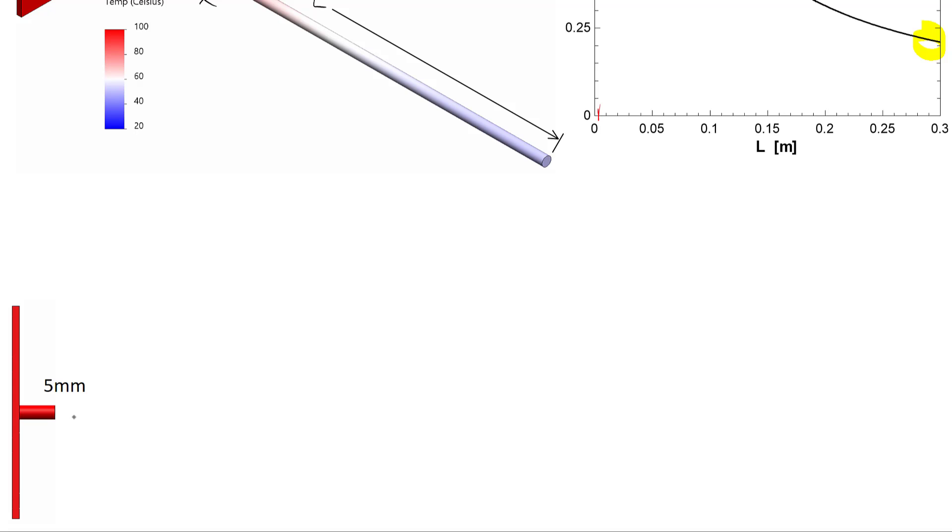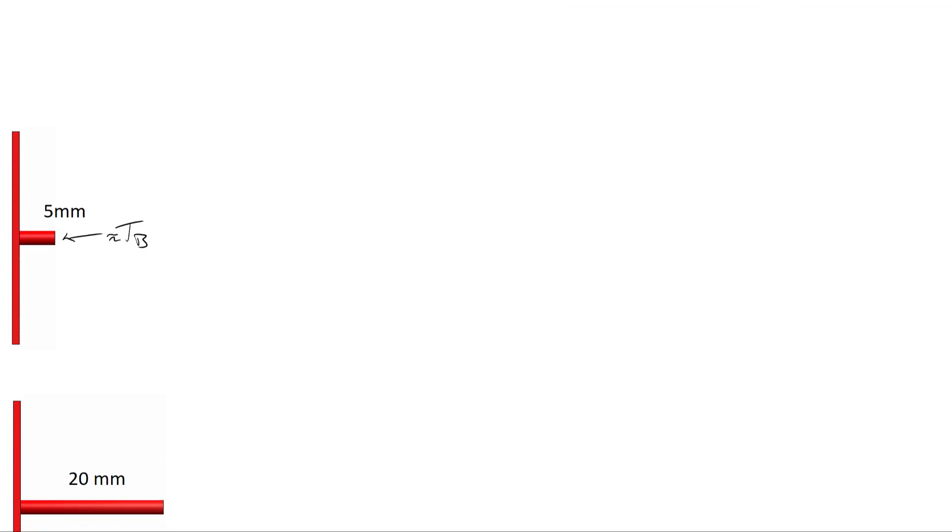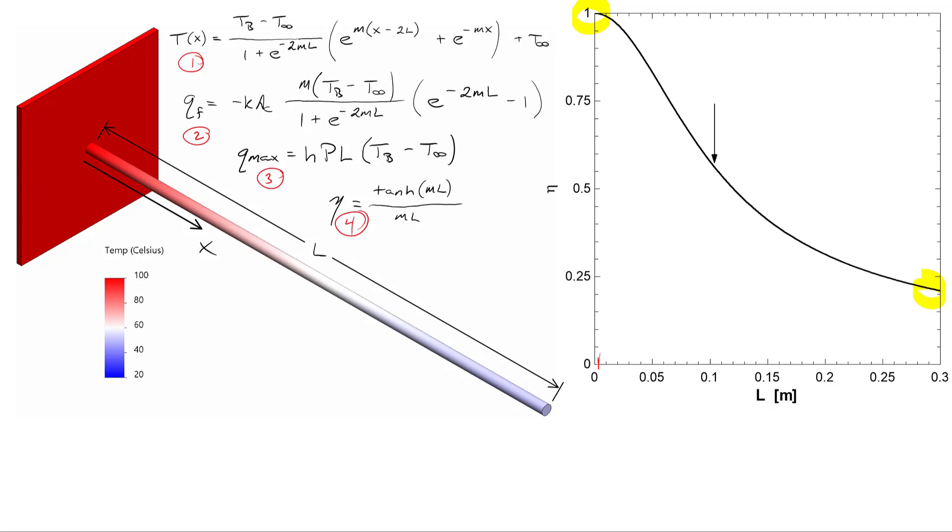If we go back to that diagram, it's not a stretch to say that this temperature at that length is about equal to the temperature of the base. Not a bad approximation. Again, still not a bad approximation when we come to 20 millimeters or 2 centimeters. 2 centimeters on this diagram being represented by an efficiency still very close to 100 percent.